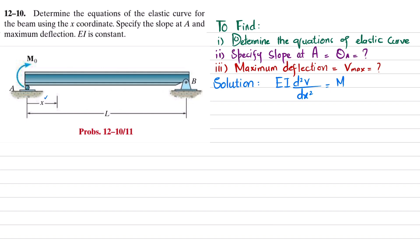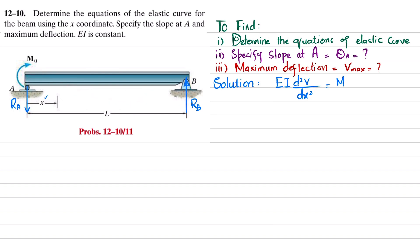To find the moment, we remove the supports at points A and B. The reaction R_B will be an upward force and R_A will be a downward force, because the applied moment M₀ causes the beam to bend downward — so R_A acts downward and R_B acts upward to maintain equilibrium. We find R_A and R_B using equilibrium equations.